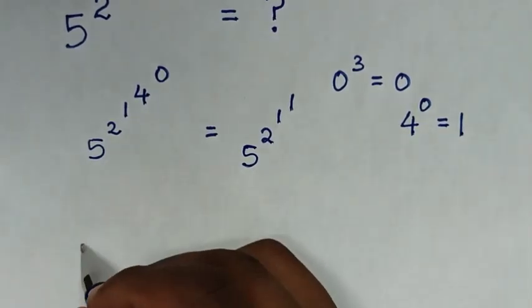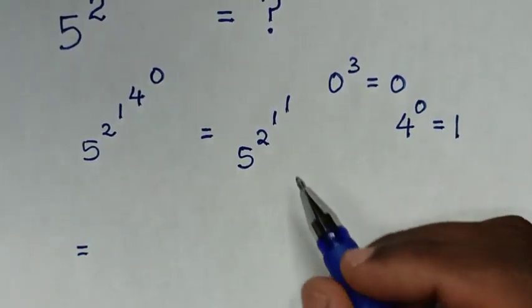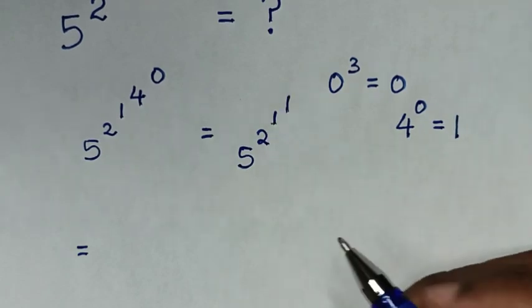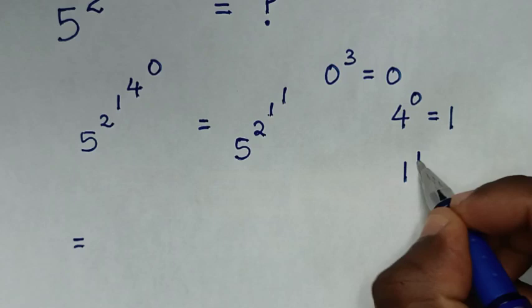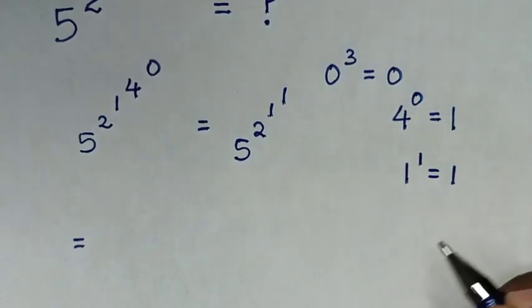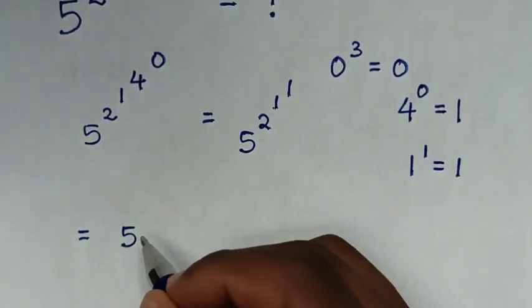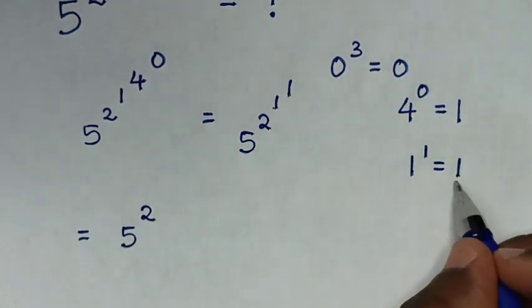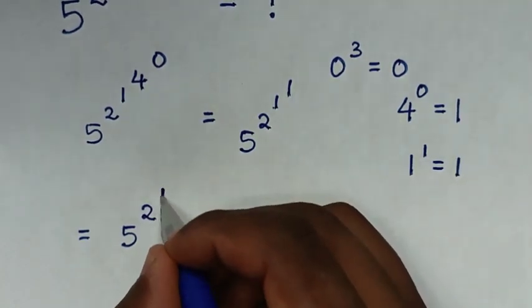In the next step, we will work with these two top powers, which is 1 power of 1. 1 power of 1 is equal to 1. So it will be 5 power of 2, then power of 1.